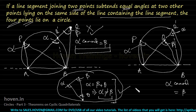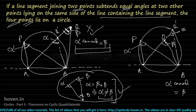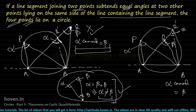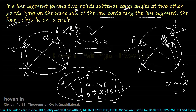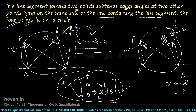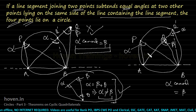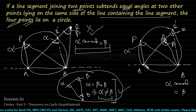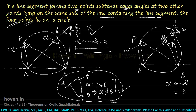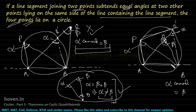So, Q cannot lie outside the circle and Q cannot lie inside the circle. Therefore Q must lie on the circle, proving the theorem. Four points lying on a common circle are called cyclic, and the quadrilateral formed by four cyclic points is called a cyclic quadrilateral.